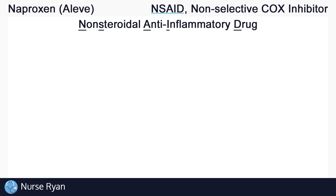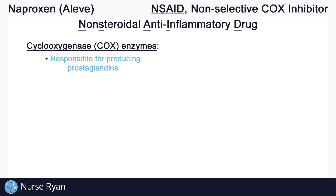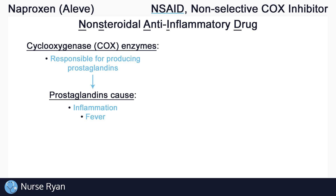So let's talk about how naproxen works. In our body, we have enzymes called cyclooxygenase, or COX for short, that are responsible for producing prostaglandins. Prostaglandins have many different effects throughout the body — they help cause inflammation and fever, which aid in the healing process in our body.